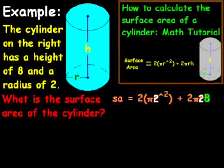So surface area is going to equal 8π for one component. And then the other component is going to be either 2 times 2, which is 4, times 8, which is 32.